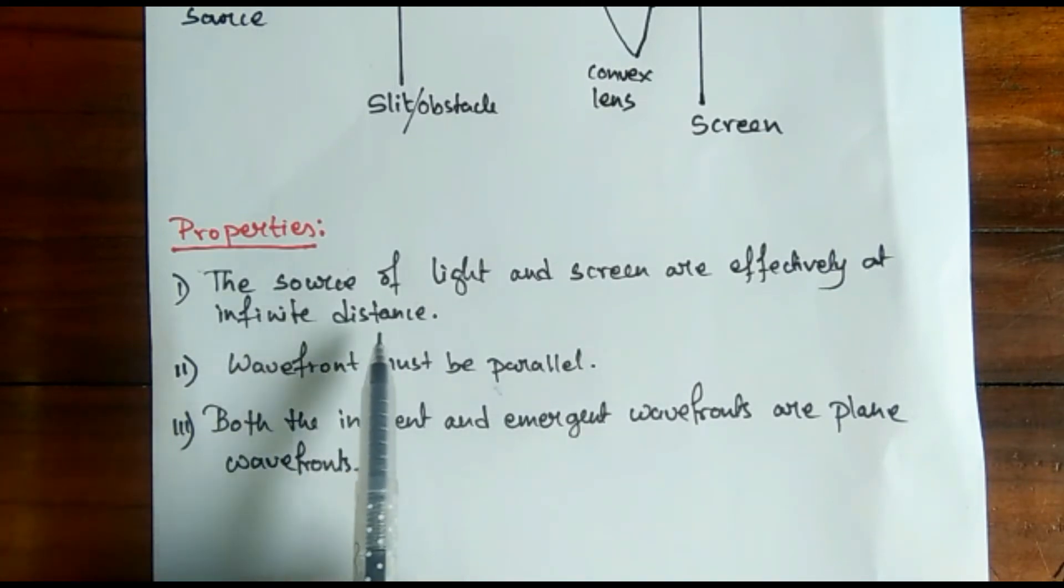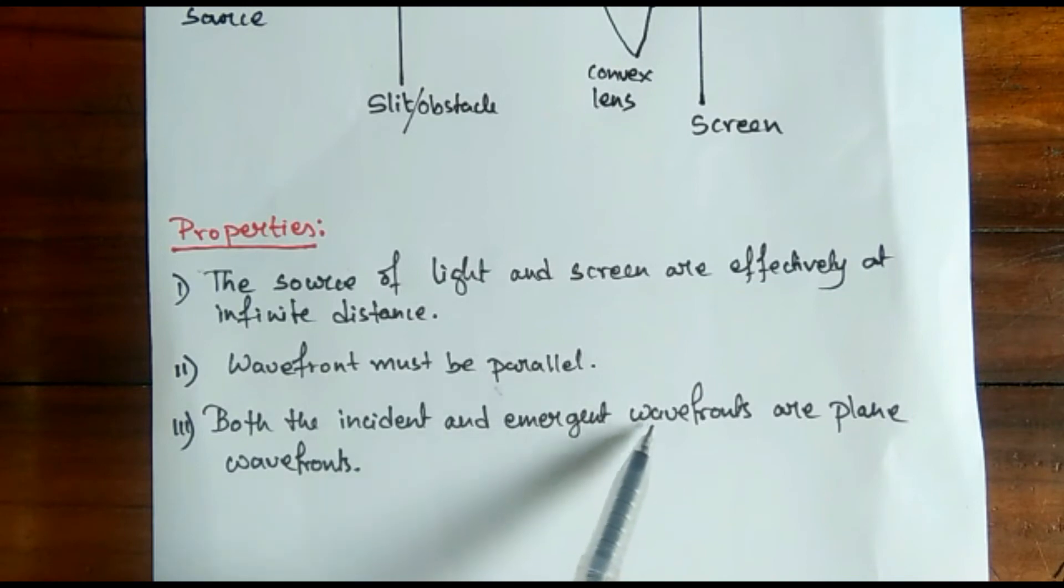Plane wavefronts means that since the source is at infinite distance from the slit, the incident rays coming from the source falling on the obstacle should be plane wavefront. That is, the locus of all points having same phase should be same at a given instant of time.